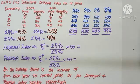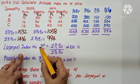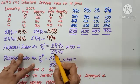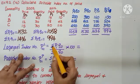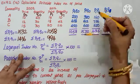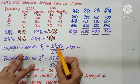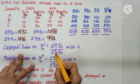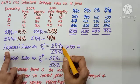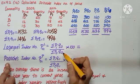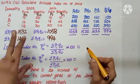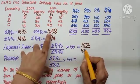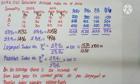Let us substitute in Laspeyre's index number. The formula, we denote P01^L, is sigma P1Q0 by sigma P0Q0. Remember, in all the formulas, sigma you mustn't forget because we are summing up. And in all the formulas, current year price in the numerator, base year price in the denominator. So P1 by P0. Laspeyre, I put base year quantity Q0. Just substitute the total P1Q0, 1532 by P0Q0, 1058 into 100. Simplify and write the answer. We get 144.80.